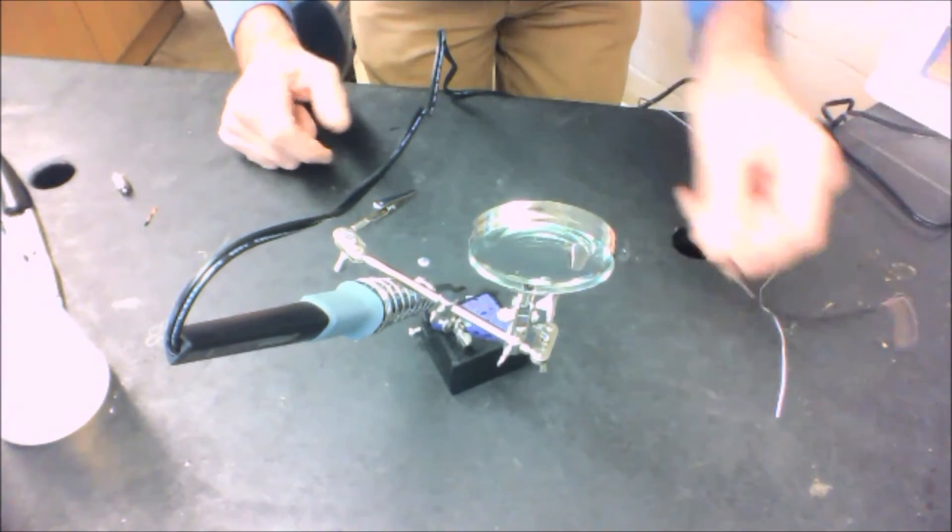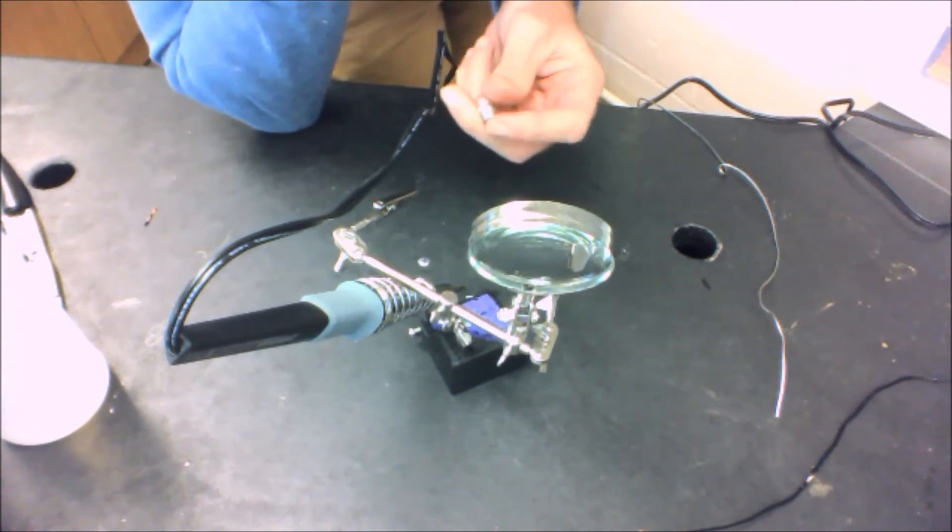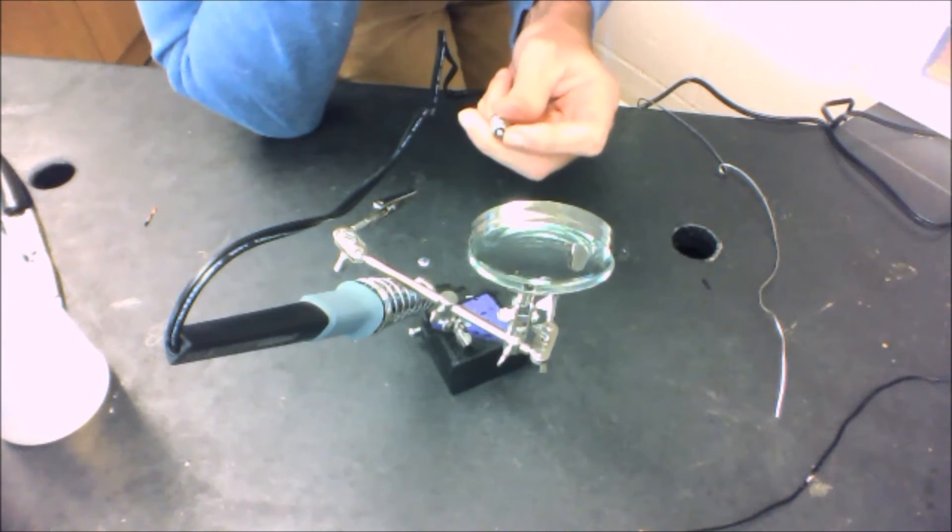Now, the next thing I want to try to do is a light bulb. This is going to be a little trickier because you have to put one connection on the bottom of the bulb and one on the side.